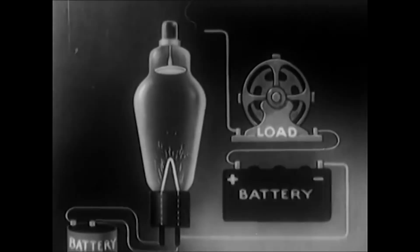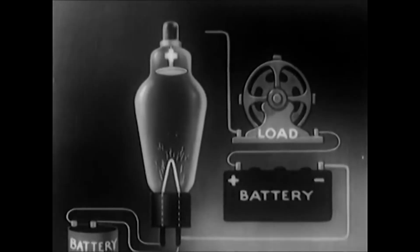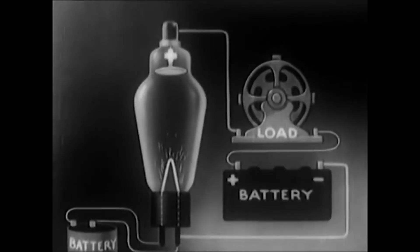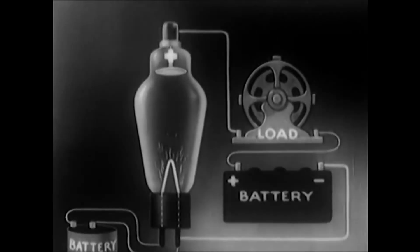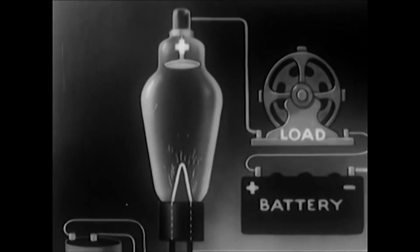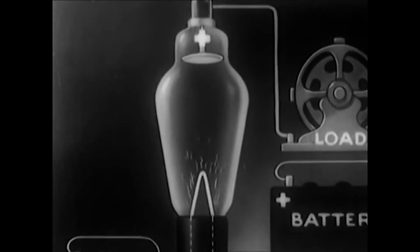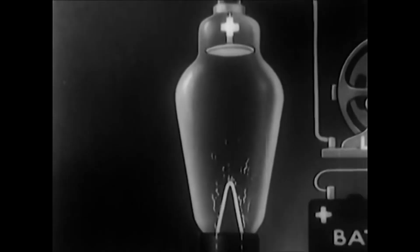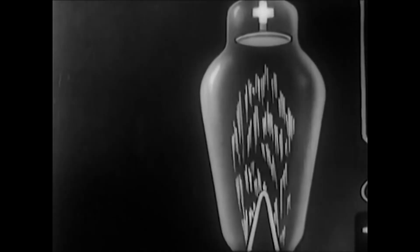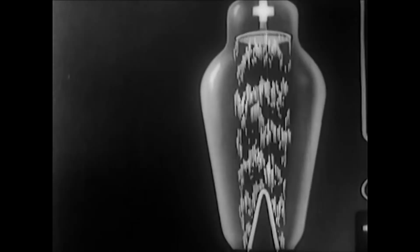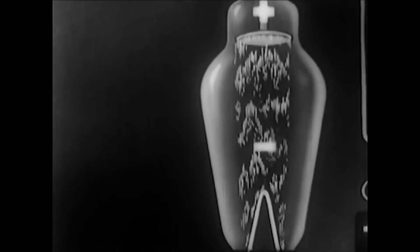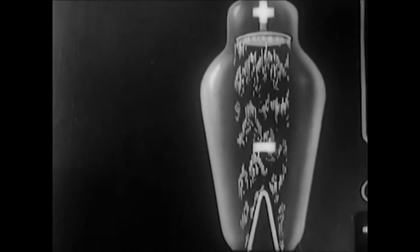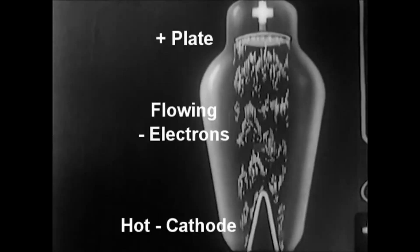At its simplest, a vacuum tube is made up of a cathode and an anode encased in a vacuum sealed glass tube. And when the cathode is heated up by an electrical source, a stream of electrons flow toward the anode, giving the anode a positive potential.